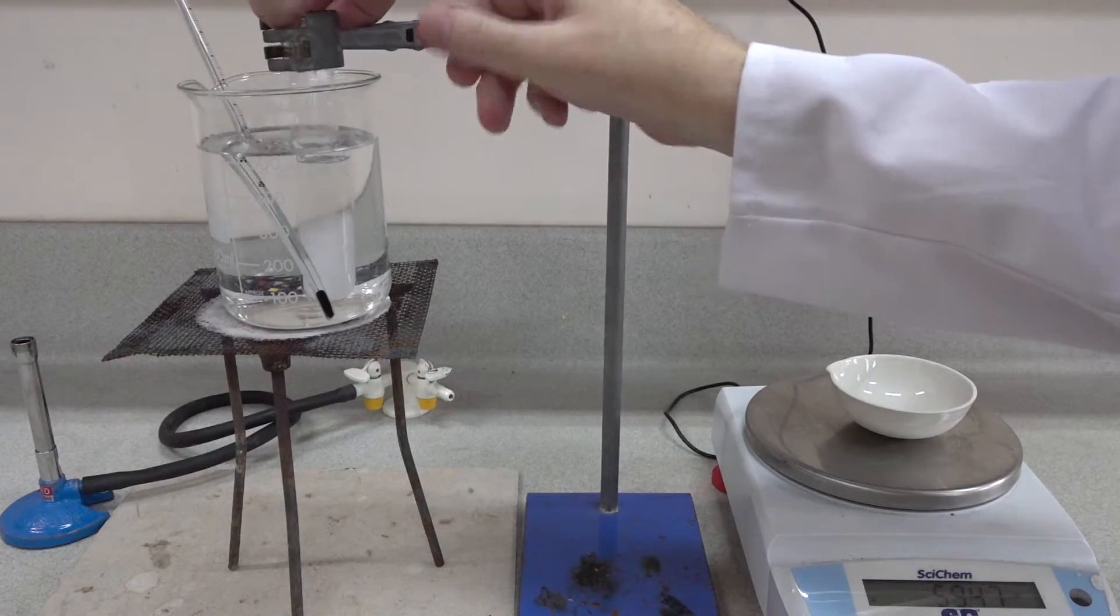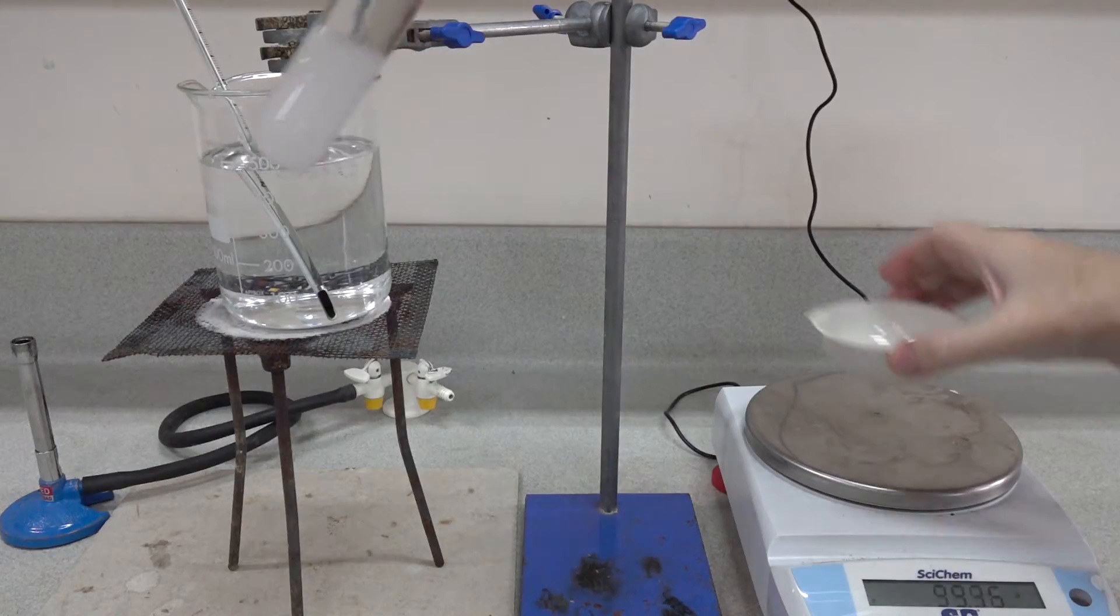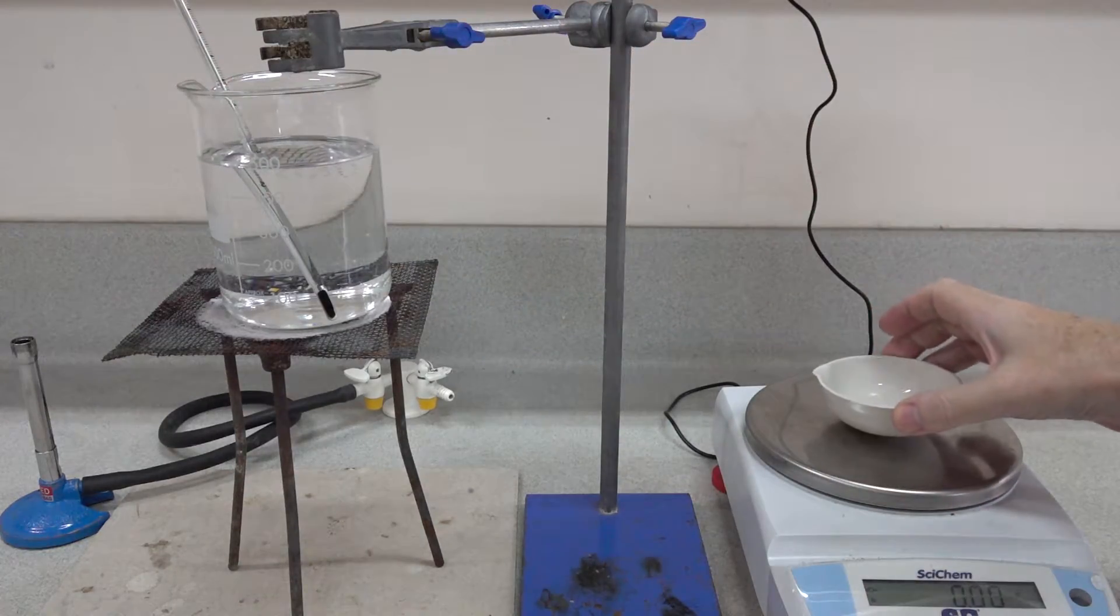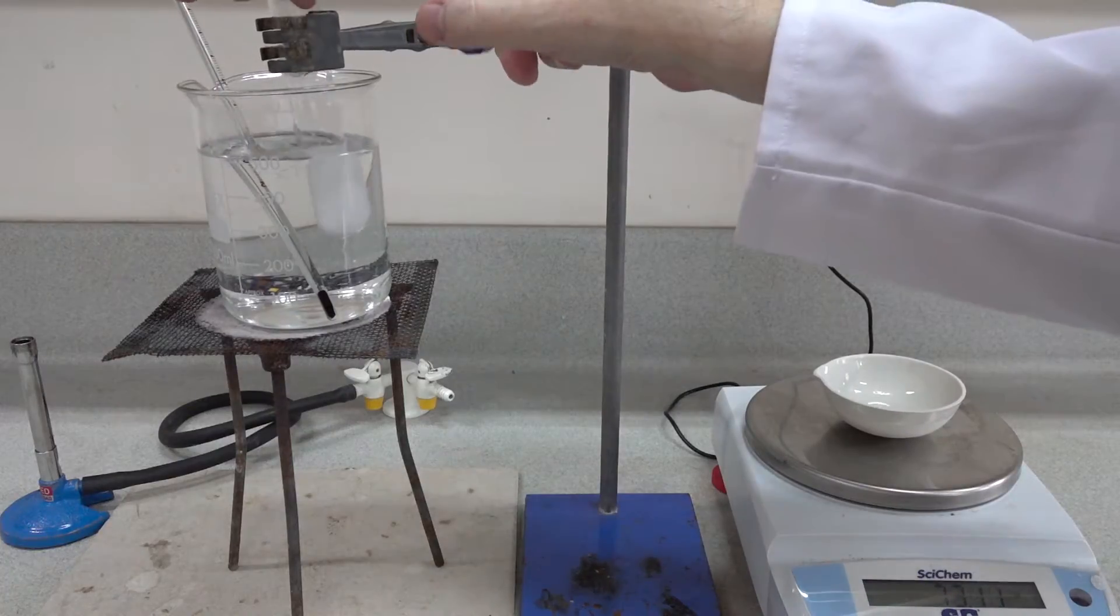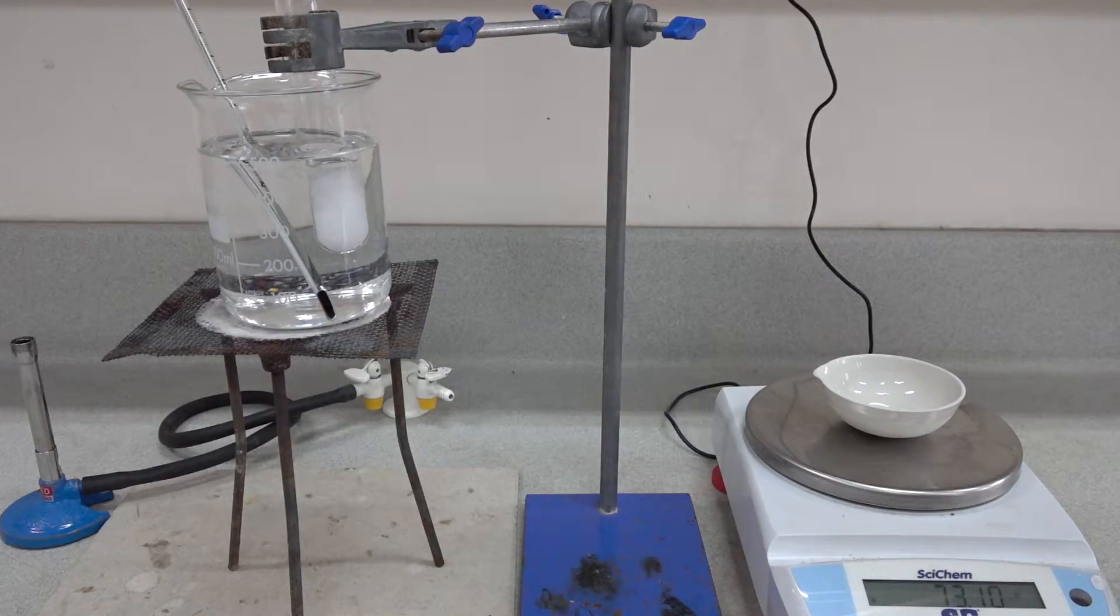We move the boiling tube and all we need to do is to pour a small amount into the evaporating basin but not any of the solid. The reading is now 73.10 grams.